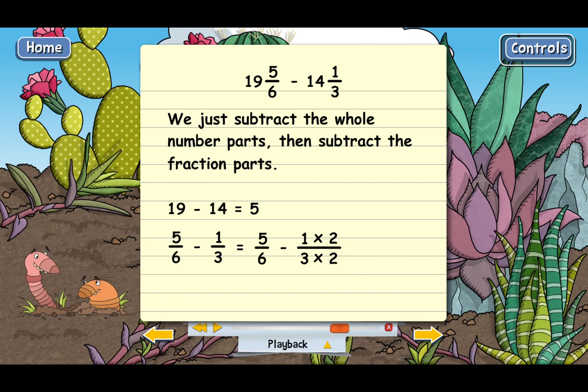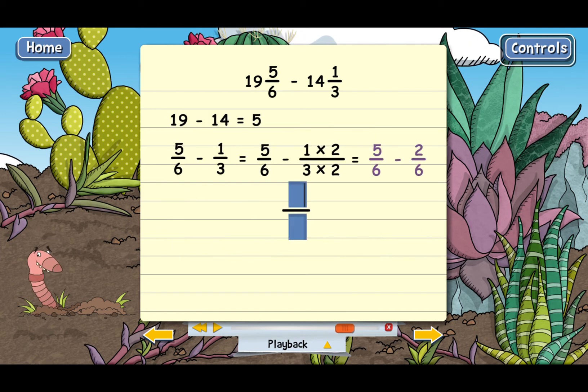But when we do that, that turns one third into two-sixths. And then we end up with five-sixths minus two-sixths. Now go ahead and subtract the fractions. Good. So we end up with three-sixths.